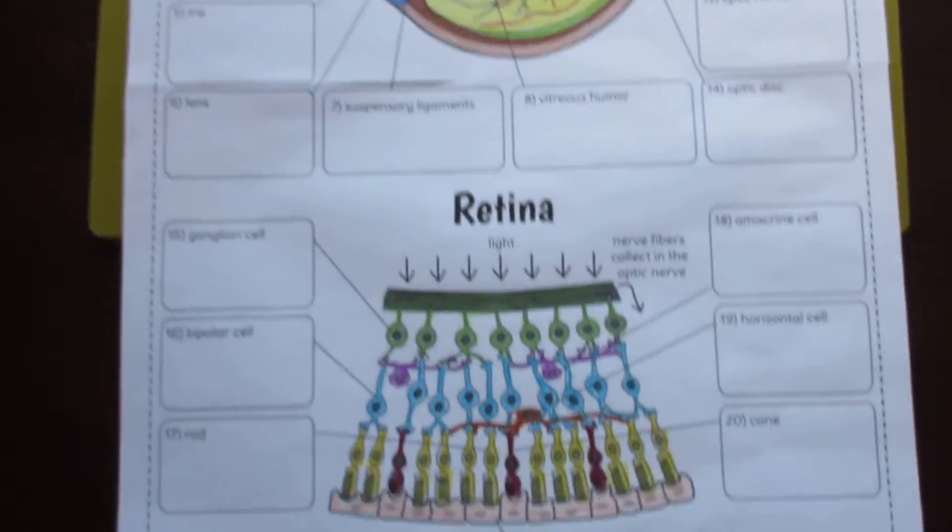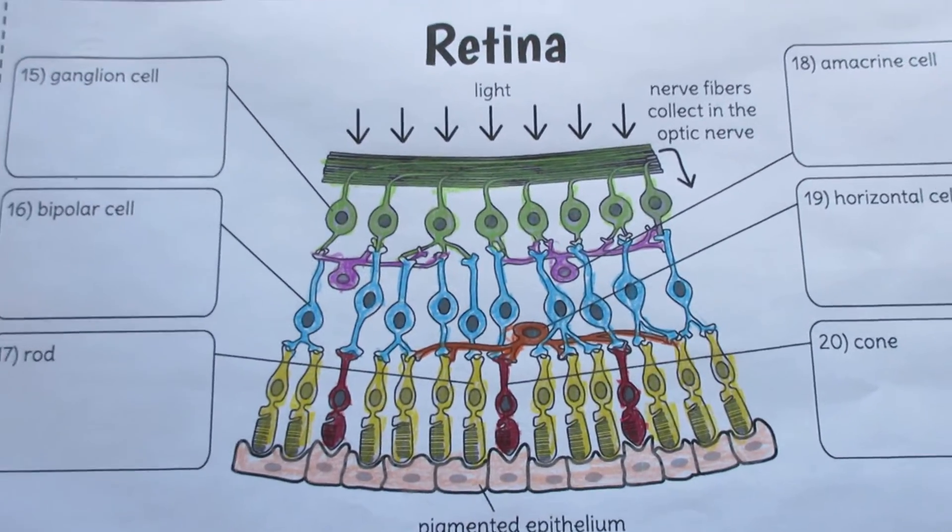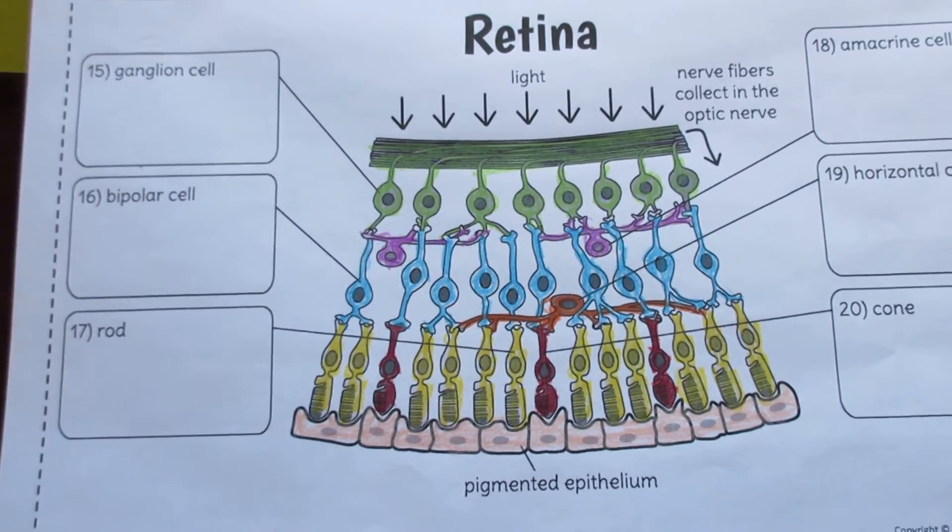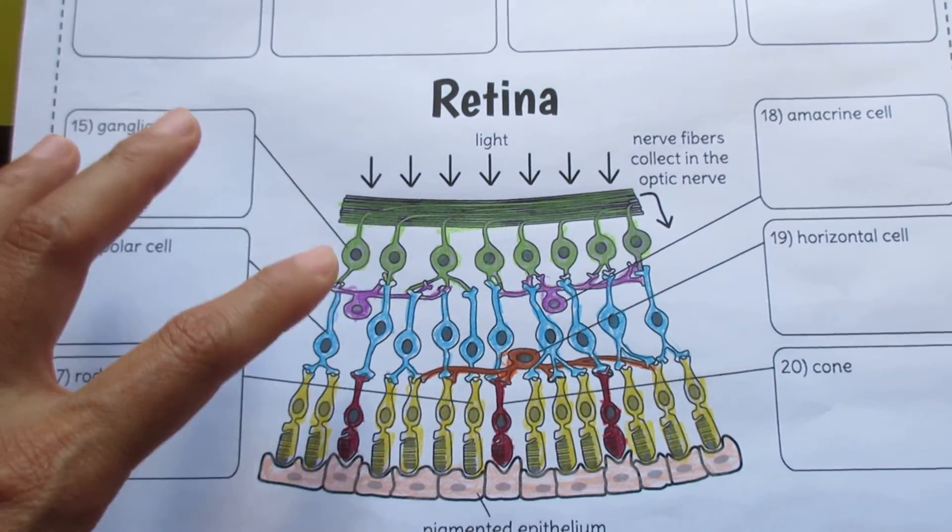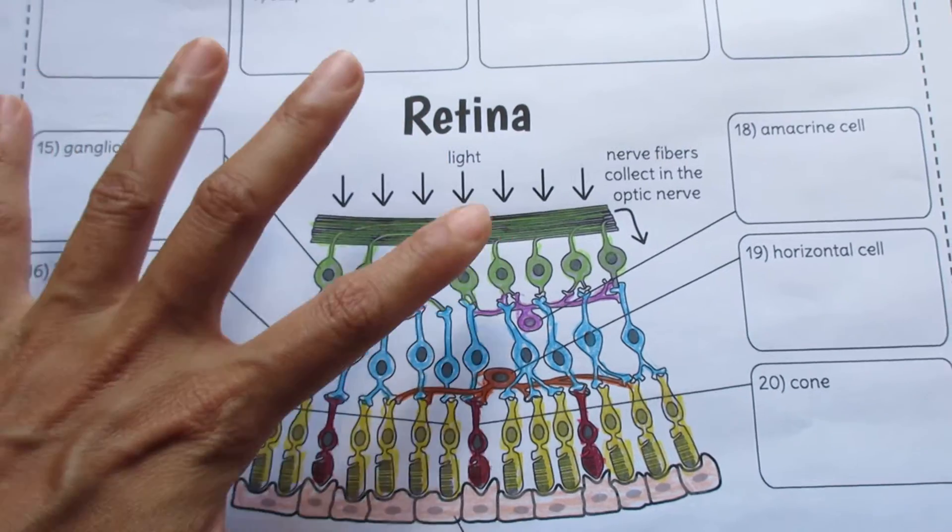In addition, I've also added this second section if you want to go further and talk about the different cells of the retina. This way, students can better understand how these cells lead to vision formation.